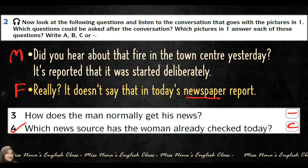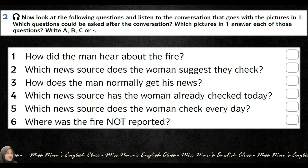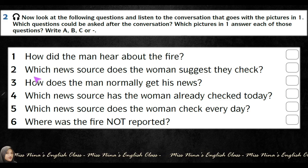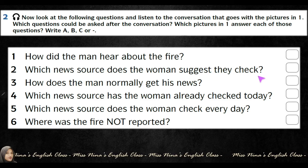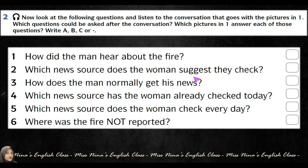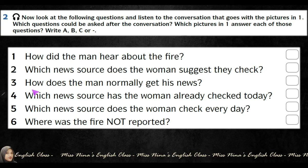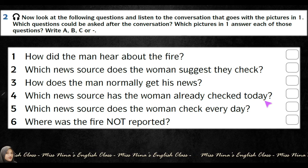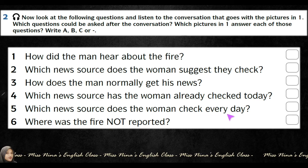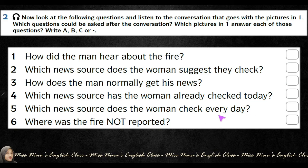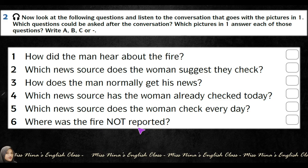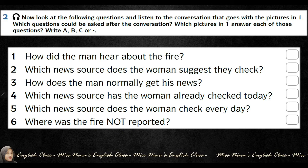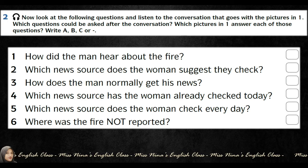This is how you complete this exercise. Now let's look at all six questions. Number one: how did the man hear about the fire? Number two: which news source does the woman suggest they check? Number three: how does the man normally get his news? Number four: which news source has the woman already checked today? Number five: which news source does the woman check every day? Number six: where was the fire not reported — in radio, internet, or newspaper?